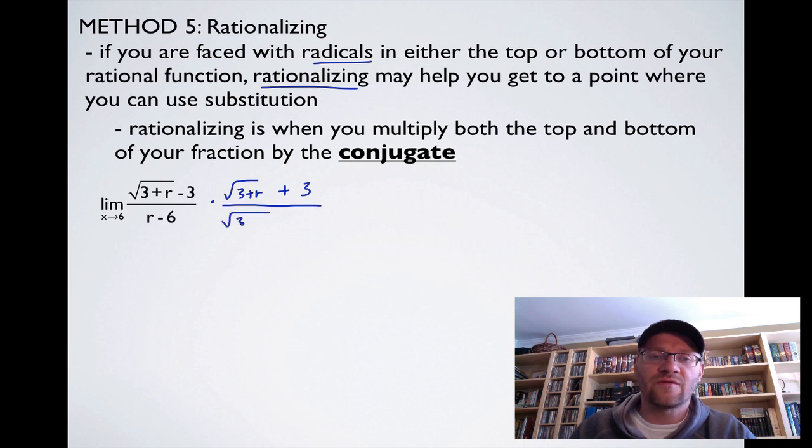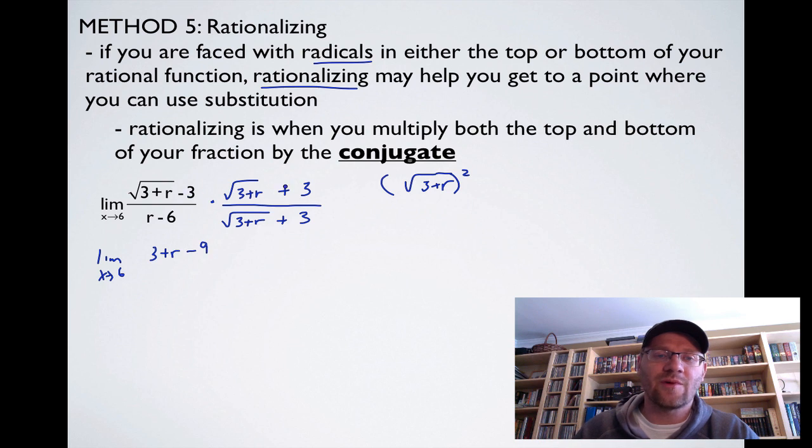The conjugate, same terms but opposite signs. And we're always going to do that with the one with the root in it. So this now becomes (3 plus r) plus 3. And on the bottom, I'm going to do the same thing because I can't just multiply the top arbitrarily by something. I have to do that to the bottom as well. On the top, root(3 plus r) times root(3 plus r) is the same thing as root(3 plus r) squared, which just cancels out that root. So we end up with 3 plus r. Because it's a conjugate, the negative and the positive, this is like a difference of squares. The middle terms actually cancel each other out, and we get a negative 9 here. We multiply 3 times negative 3. On the bottom, we're not actually going to multiply these two things together. We're going to write them just as two separate factors. On the top, we can simplify. 3 plus r minus 9 ends up being r minus 6. And on the bottom, we have (r minus 6) and the root of (3 plus r) plus 3.